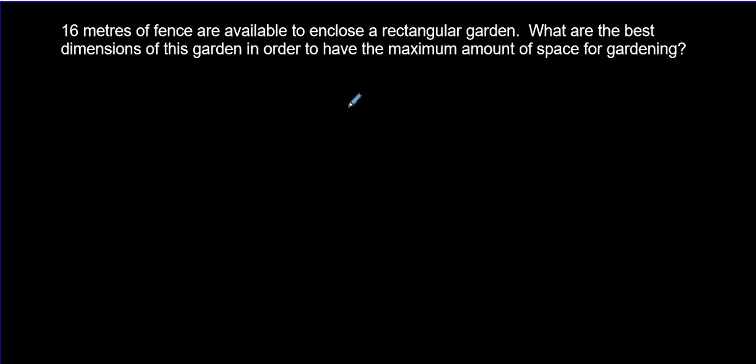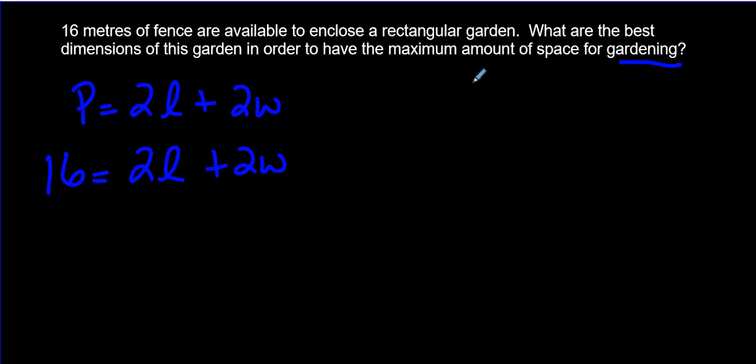So here we have another question. 16 meters of fence are available to enclose a rectangular garden. What are the best dimensions of this garden in order to have the maximum amount of space for gardening? 16 meters of fence. It's very similar to the last question. So the perimeter is 2 times the length plus 2 times the width. We know 16 meters are available. We also know that we're trying to find the maximum area.